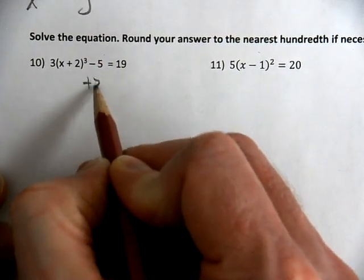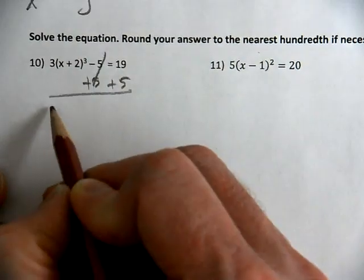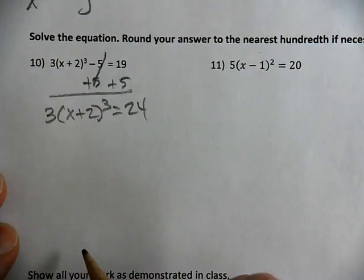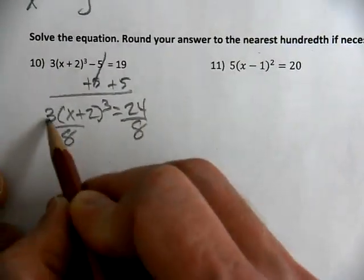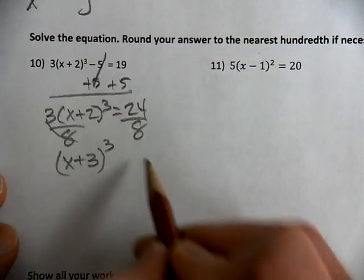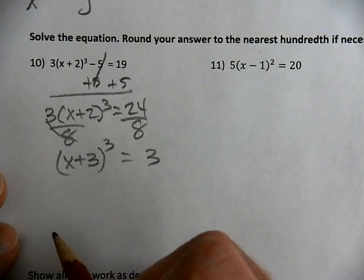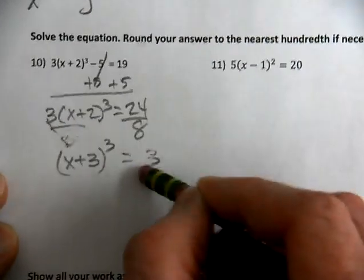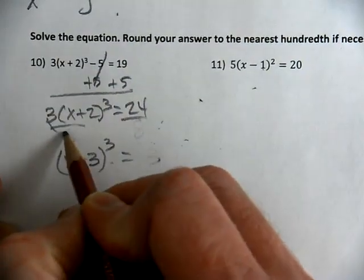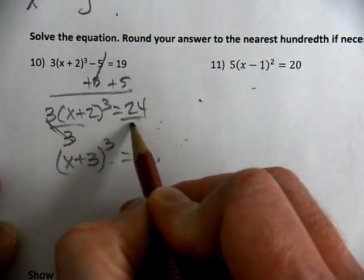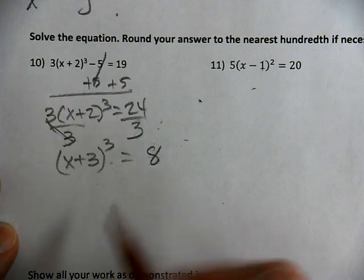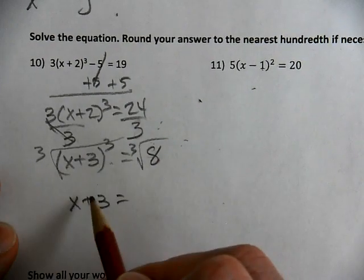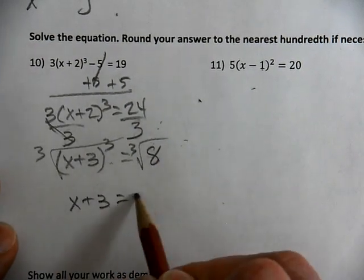Here we're solving, this is 3, x plus 2 to the third power equals 24, then I have to divide, so I've isolated my value that's being cubed. I divided by 3, which gives me 8. Now I'm going to take the cube root, and you take the cube root of something cubed, you get that value. The cube root of 8 is 2, it's not plus or minus.